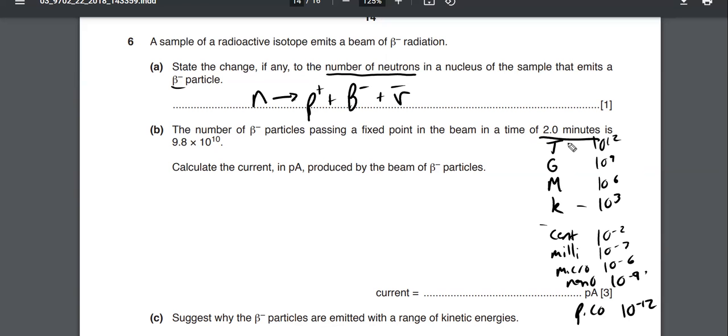They give us the time, the number of beta minus particles, and we have to calculate the current. Does anybody know what the equation for current is? Or what is a current? Current is the rate of flow of charge, right? So you've got a moving charge.